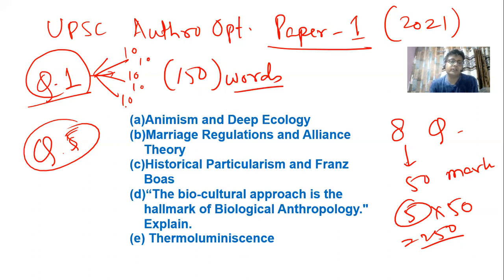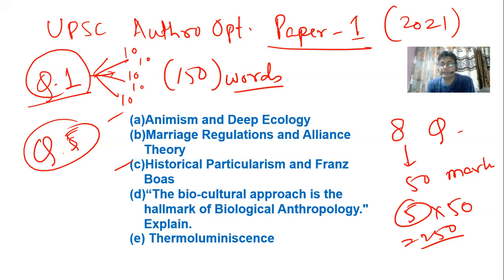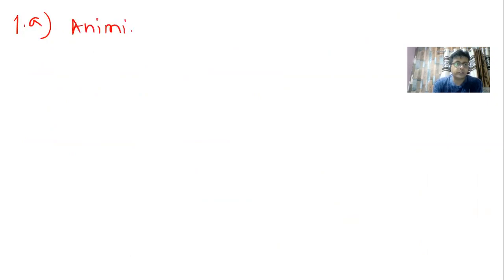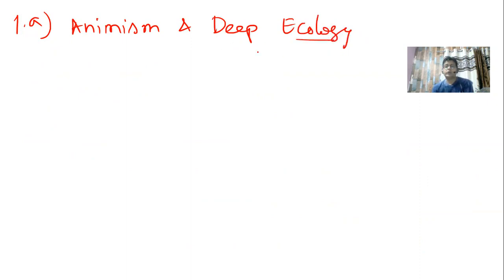150 words, 10 marks, five subsections — and it's compulsory. So if there's any topic you did not cover and that question comes in section one or five, that's a loss of 10 marks. That's why it's always advisable to cover the entire syllabus — do not leave a single phrase mentioned in the syllabus. So let's get into this first question: animism and deep ecology.